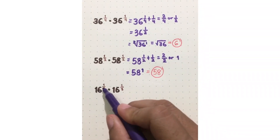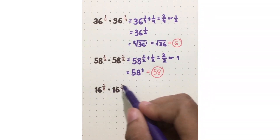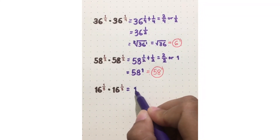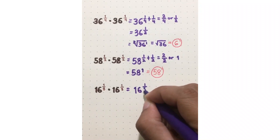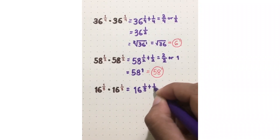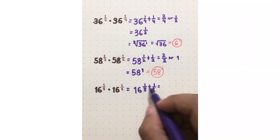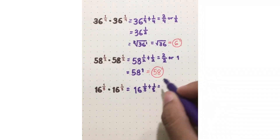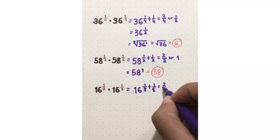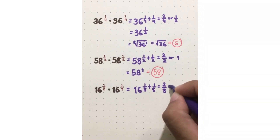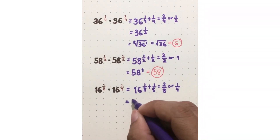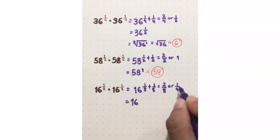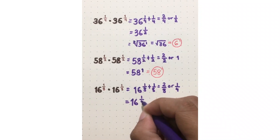Another example: 16 raised to 1 eighth times 16 raised to 1 eighth. Copy the base, which is 16, then add the exponents: 1 eighth plus 1 eighth. Add the numerators — 1 plus 1 is 2 — then copy the denominator 8. So 2 eighths can be simplified as 1 over 4. Therefore, it will be 16 raised to 1 over 4.